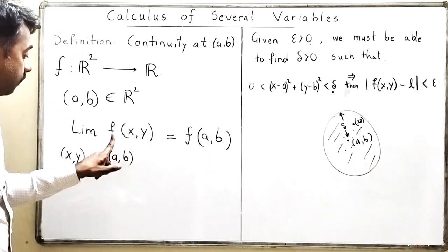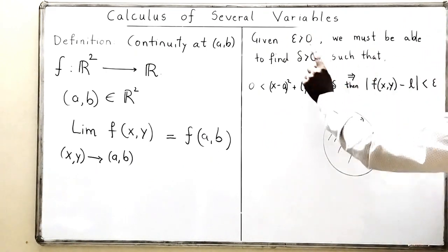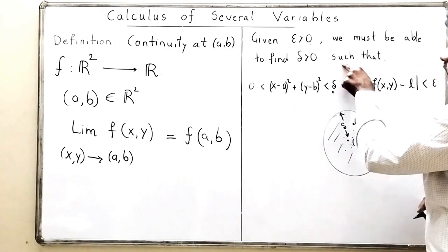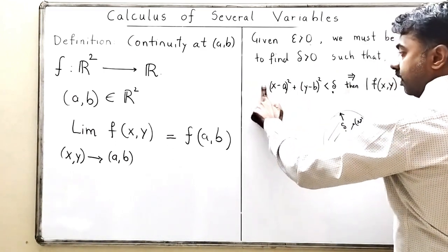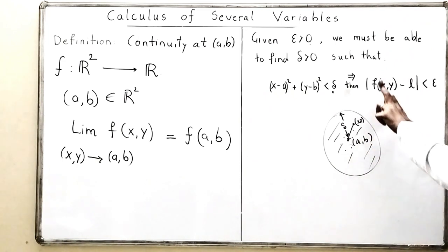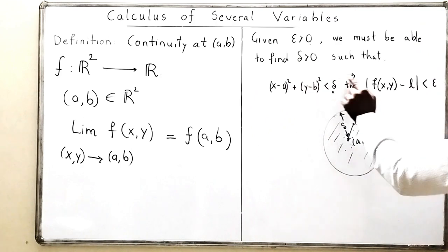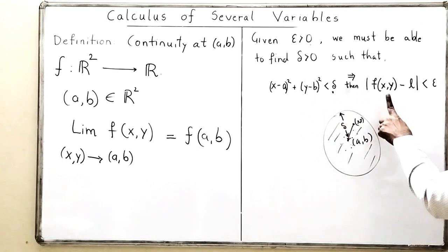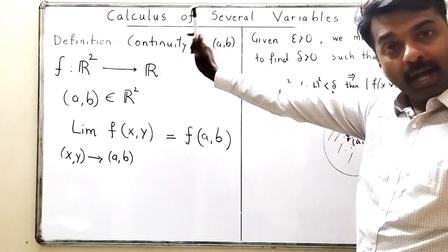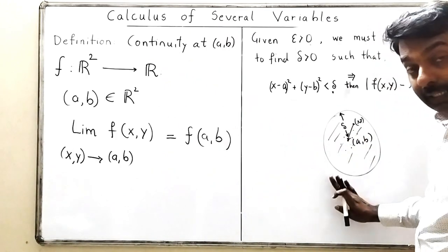The value of the function at (a, b) is f(a, b). So continuity means the limit equals the value of the function. The analytical definition is slightly different: given epsilon positive, we must find delta such that now (x, y) is allowed to become (a, b) — that condition is removed. So (x − a)² + (y − b)² < delta implies |f(x, y) − L| < epsilon. This is the definition of continuity for functions from R² to R.